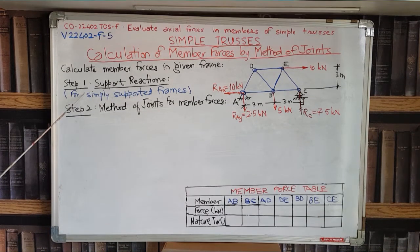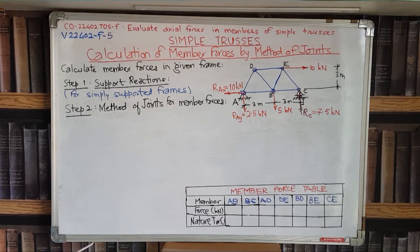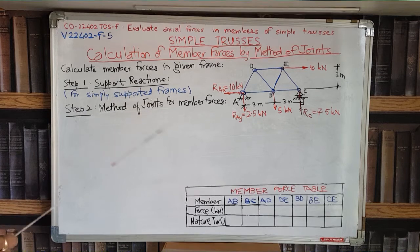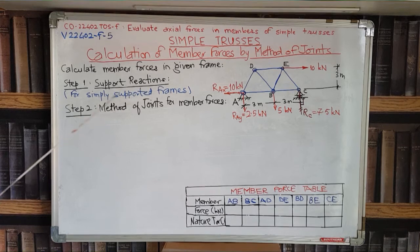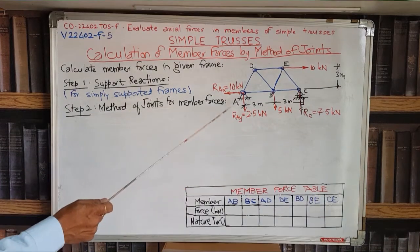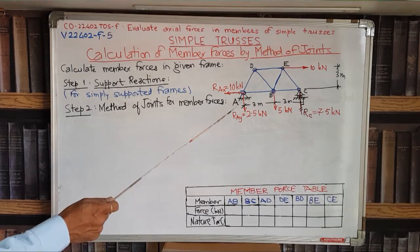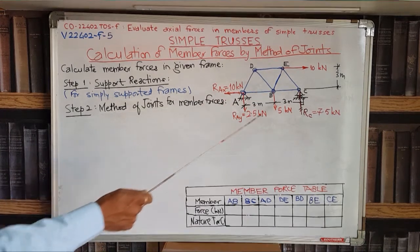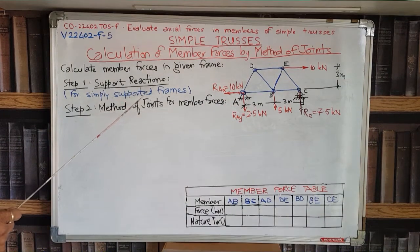Step 1 is calculation of support reactions. We have seen in an earlier video lecture that this type of calculation of support reactions is necessary for simply supported frames only. For cantilever type of frames, this step is not required. In this case, the frame is simply supported — you can see a hinge support at A and a roller support at C. So this is a simply supported frame, and step 1 will be calculation of support reactions.